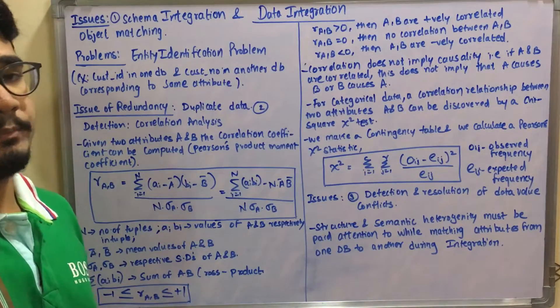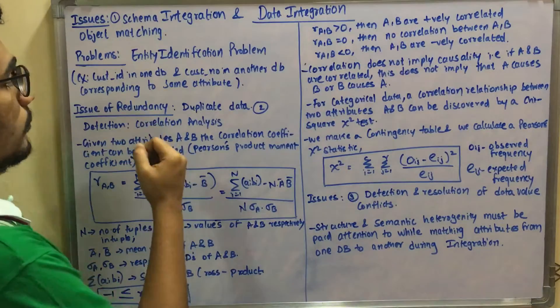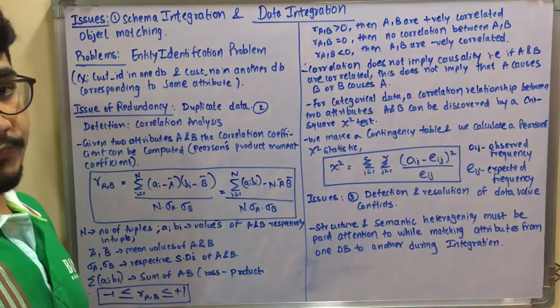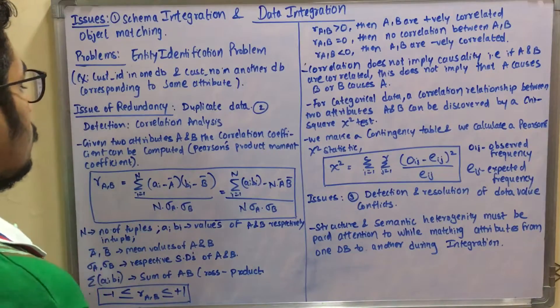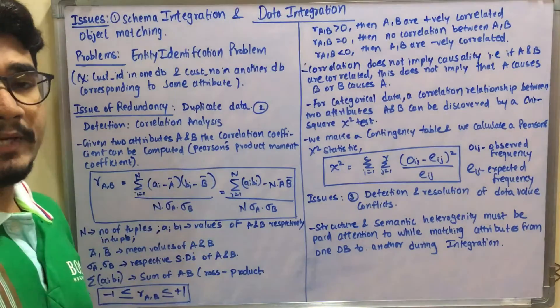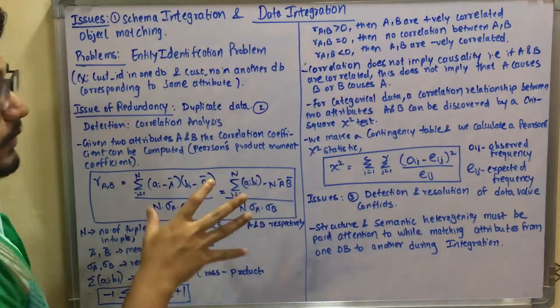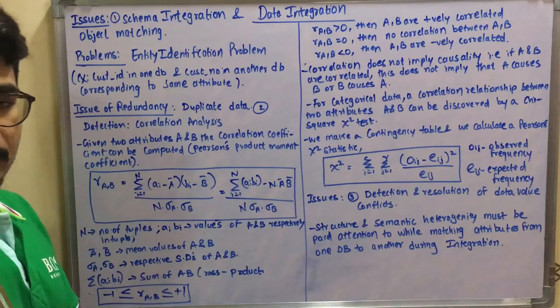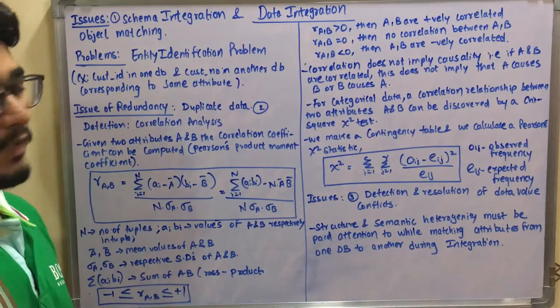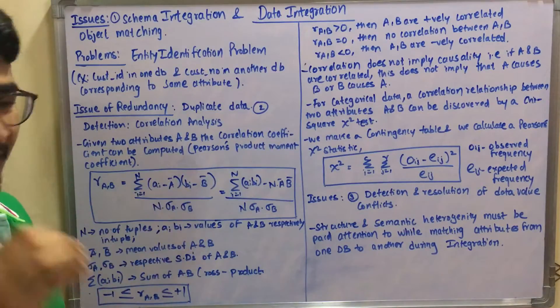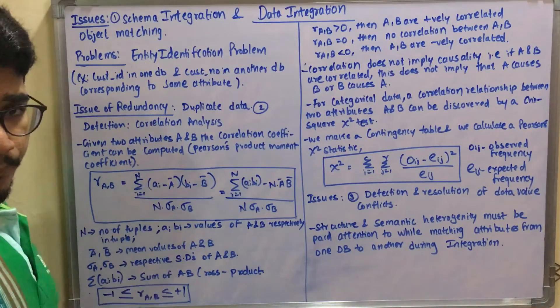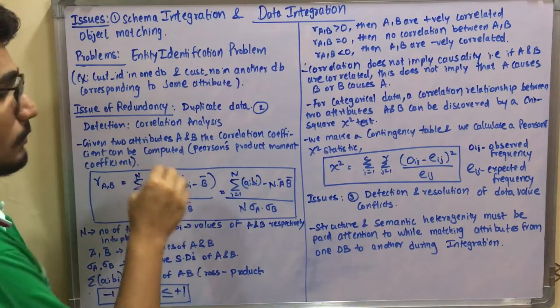You can do correlation analysis to identify what data is not matching and how. For doing that you have a mathematical measure. Suppose you have two different attributes like A and B, consider as two different columns.